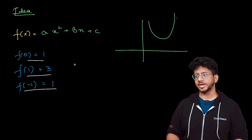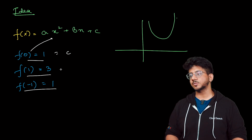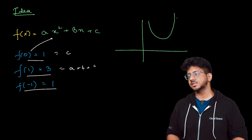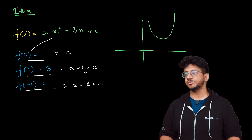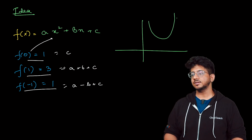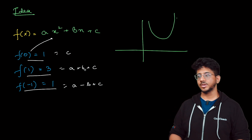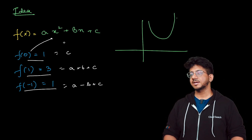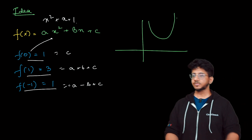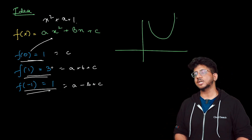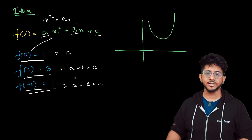It turns out it's very simple. If you put 0 into the expression you get c. If you put 1 you get a + b + c, and if you put -1 you get a - b + c. From here you can deduce that c = 1, a + b = 2, and a - b = 0, so a and b are also equal to 1. Putting them back gives you the polynomial x² + x + 1. So if you have three values, you can find the three constants by solving the simultaneous equations.